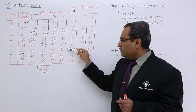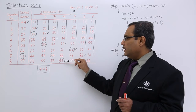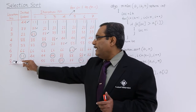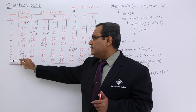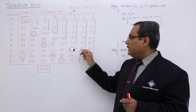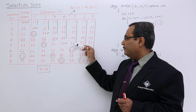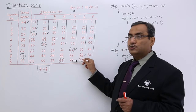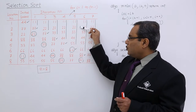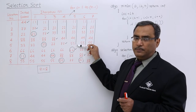What is the location of the minimum data from 5 to 8? It is at the eighth place — 55. Is 8 equal to 5? No. So that means I require swapping between 77 and 55. So they have got swapped. Now the array has been sorted up to location 1 to 5.